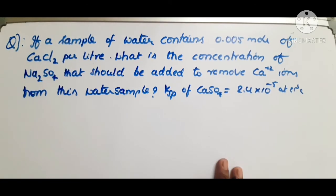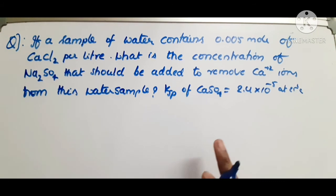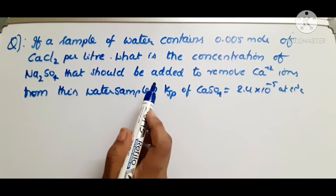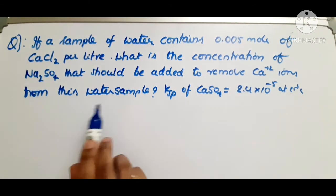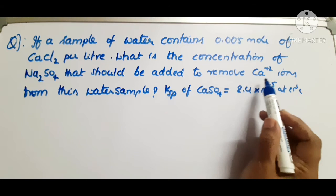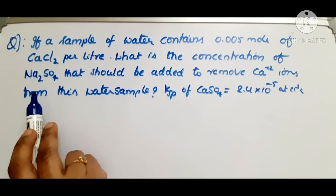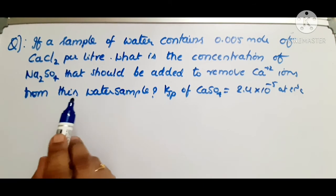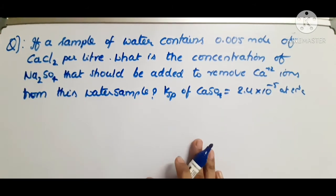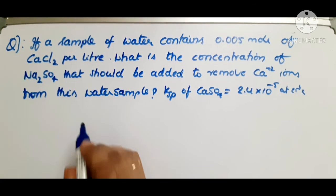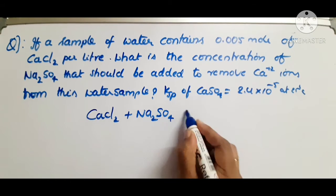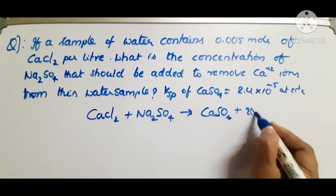Next example — this is a tricky question. If a water sample contains 0.005 moles of calcium chloride per liter, what concentration of sodium sulfate should be added to remove Ca²⁺ ions? When CaCl₂ is mixed with Na₂SO₄, you get CaSO₄ as a precipitate plus 2NaCl.